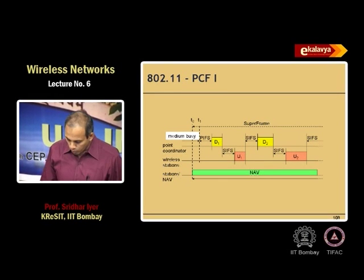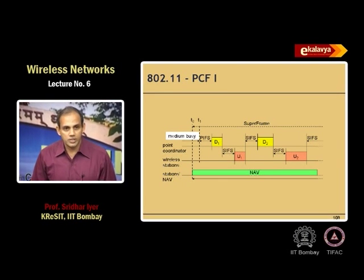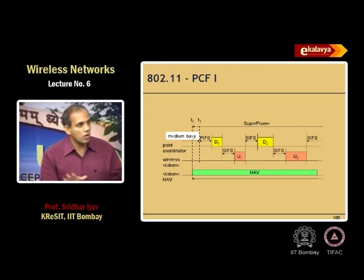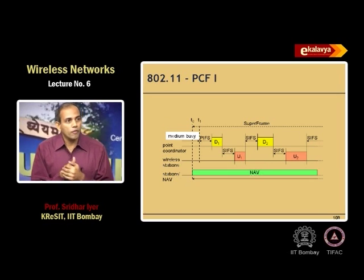This is the DCF (Distributed Coordination Function) mode of 802.11 — everybody waits for DIFS and then proceeds. The other mode, PCF (Point Coordination Function), is much easier to understand but has not been implemented by any vendor.